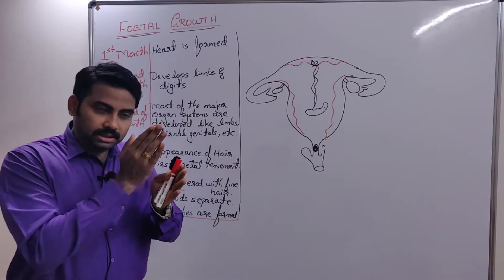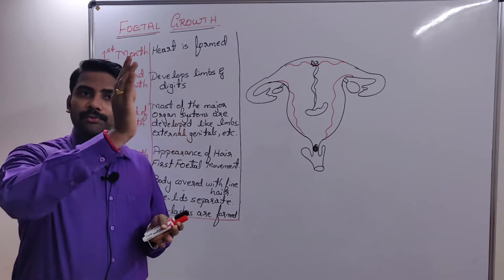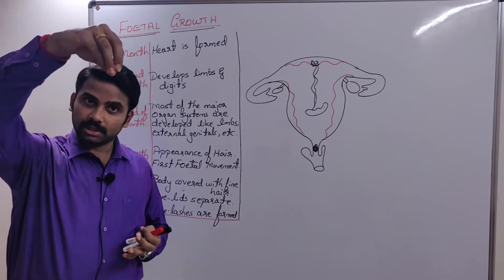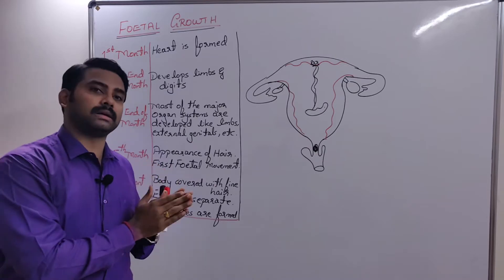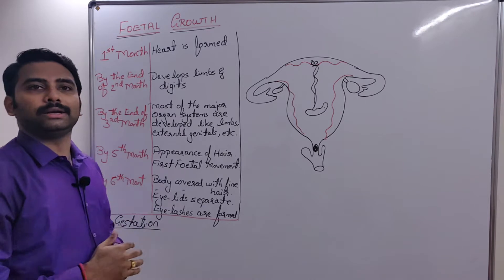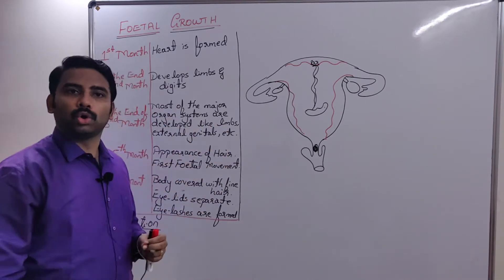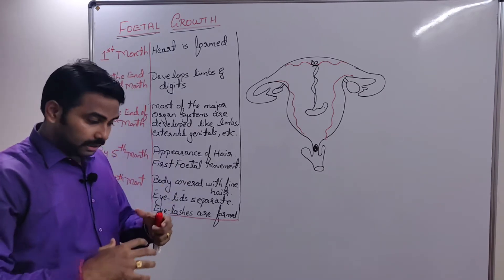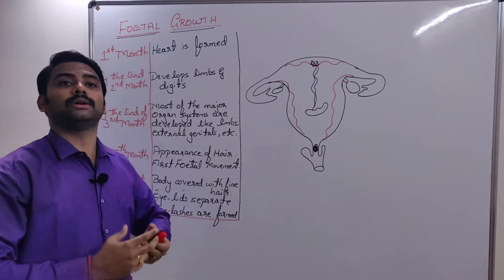The three trimesters are: the first trimester — the first three months of pregnancy; the second trimester — the fourth, fifth, and sixth months; and the third trimester — the seventh, eighth, and ninth months. During those nine months, the baby undergoes growth, a lot of changes occur, and organ development occurs. The development of organs in the embryo is called organogenesis.